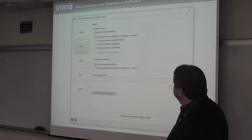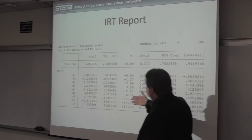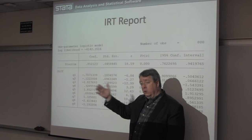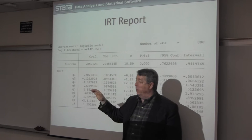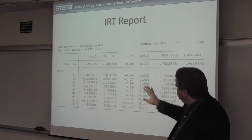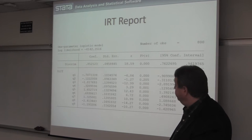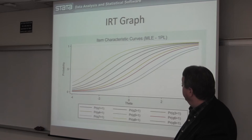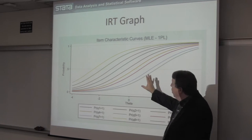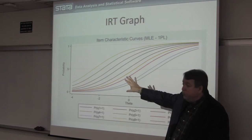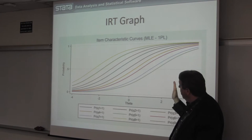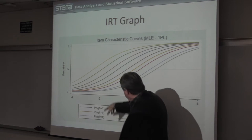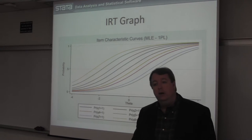If we fit a one-parameter logistic model and create a report, the characteristic of a 1PL model is that I fit a separate difficulty parameter for each item — they can all shift left to right — but I constrain all the slopes to be the same. So I have a single discrimination parameter and separate difficulty parameters. If I graph the results using a 1PL model, all slopes are the same, but the difficulties are shifted left to right. For example, question five would be more difficult than question eight, which is on the far left.